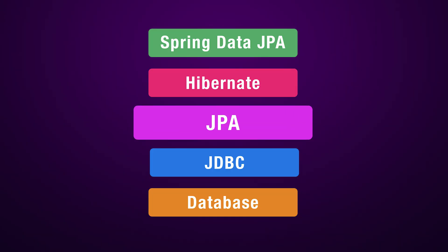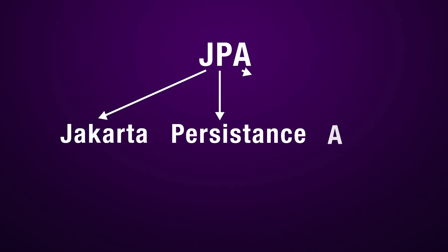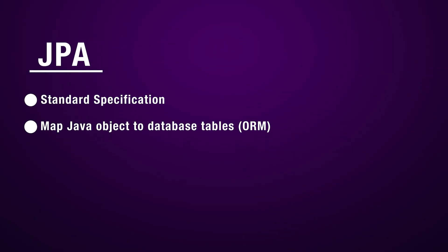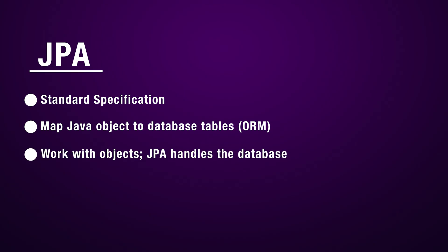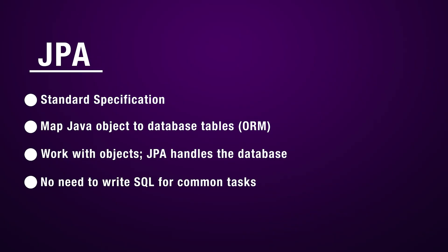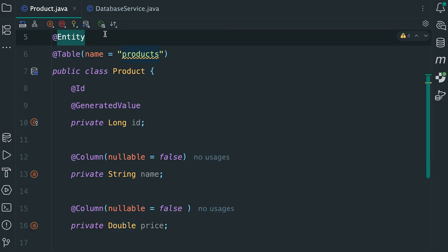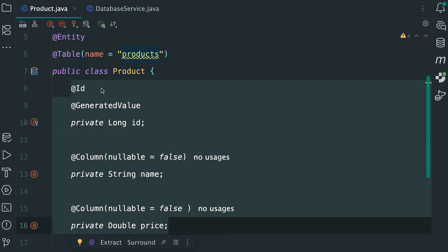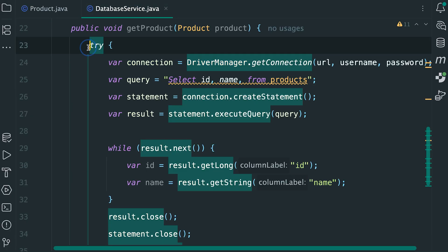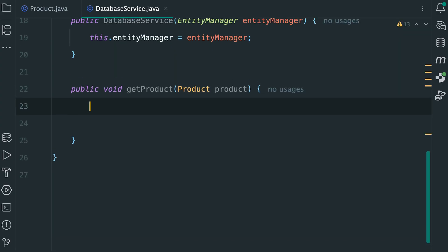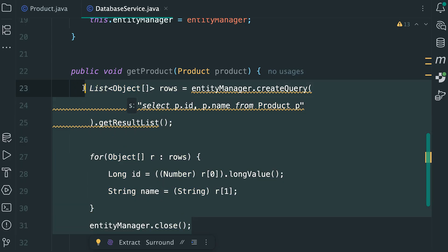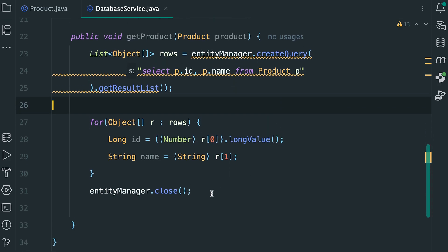To solve this, JPA was introduced. JPA stands for Jakarta Persistence API. JPA is a standard specification for mapping Java objects to database tables, a concept known as Object Relational Mapping, or ORM. With JPA, you work with your Java objects and the framework handles the translation to database operations. We do not need to write SQL queries for common operations like saving or retrieving data. For example, we can have a product class annotated with @Entity and @Table, along with other annotations for related fields. With this, we can reduce the verbose JDBC code to a much simpler one, significantly reducing boilerplate code and providing a cleaner, object-oriented way to interact with our database.